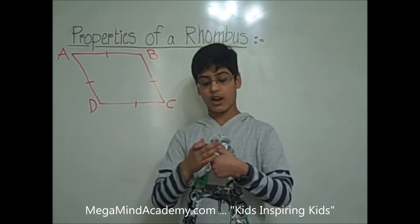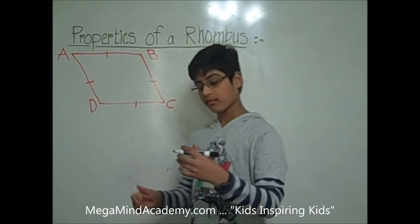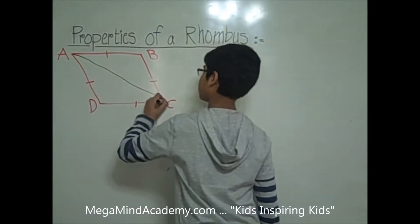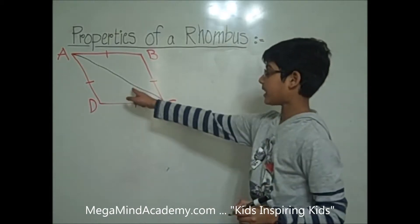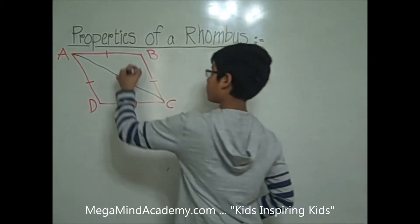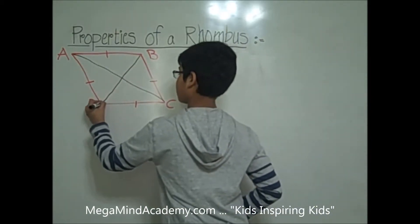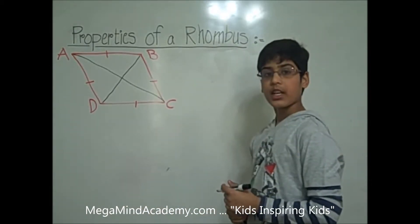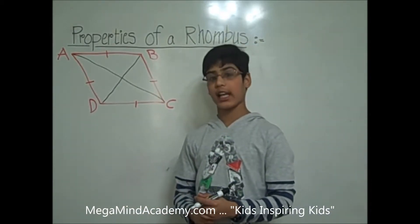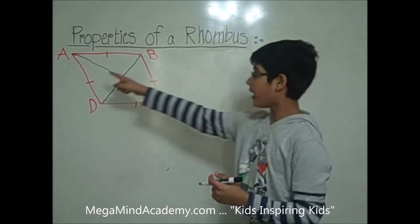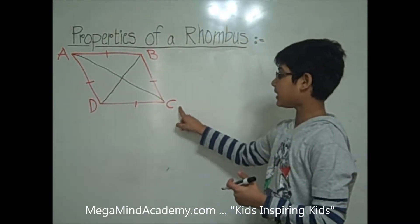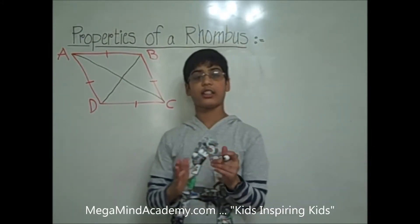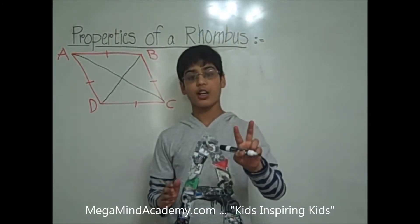Let's draw our diagonals. This is diagonal 1. This is diagonal 2. Each diagonal bisects the vertex angles A, B, C, and D, which means it splits that angle into two equal parts.